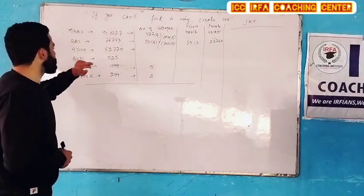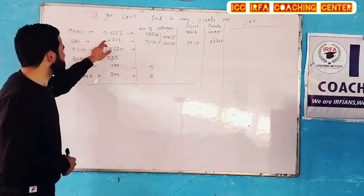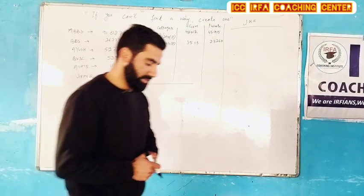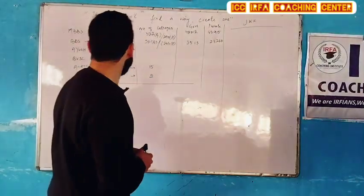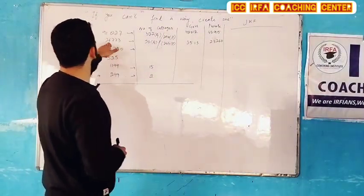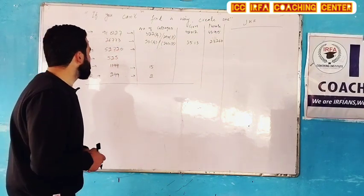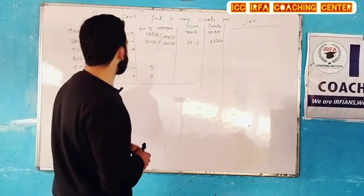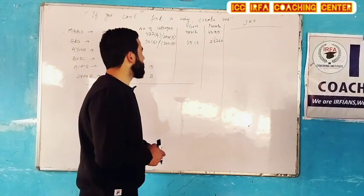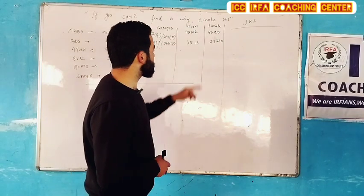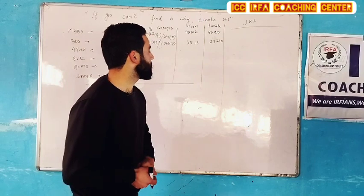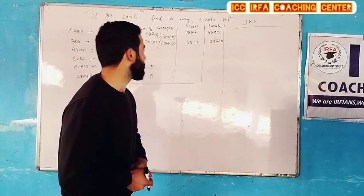If you have BDS — Bachelor of Dental Science or Surgery — there are 26,773 seats. The number of colleges is around 50 for government. Government seats are 3,530 and private seats are 23,266.